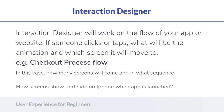Interaction designers work on the flow of your app — how someone is going to click or tap and where the screen will flow to take the user to another screen. You might have seen checkout process flows on different websites — they are totally different. If you go to Amazon, there are about five or six steps in the checkout process.